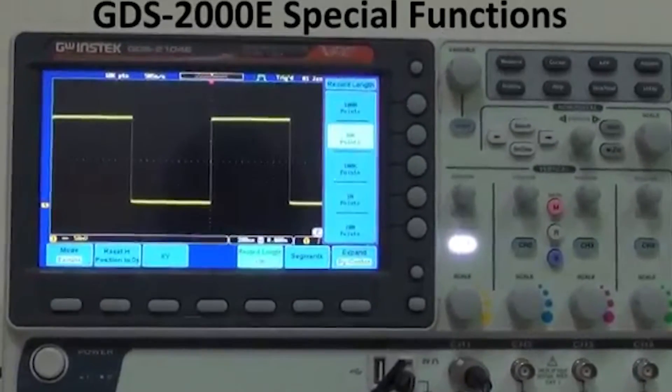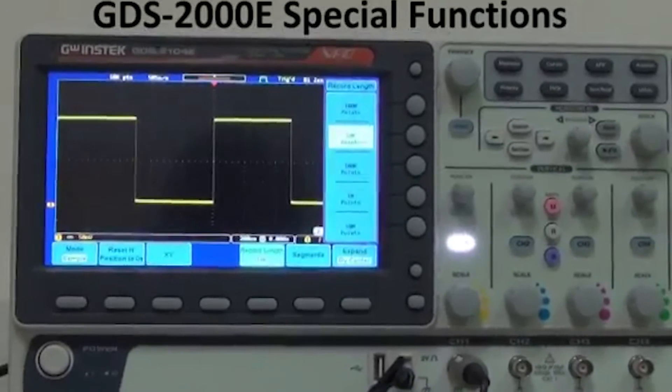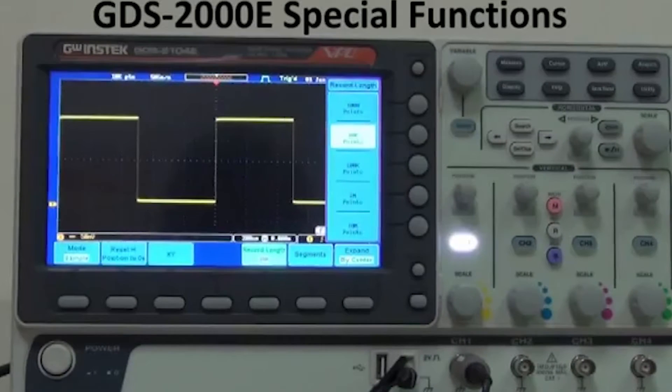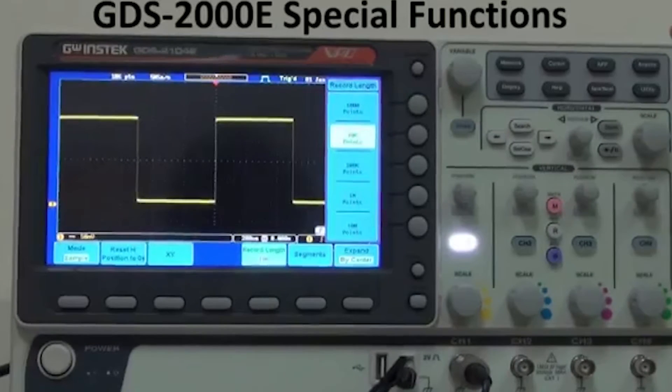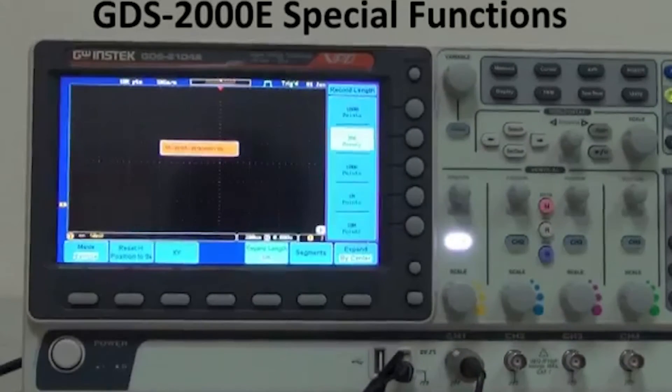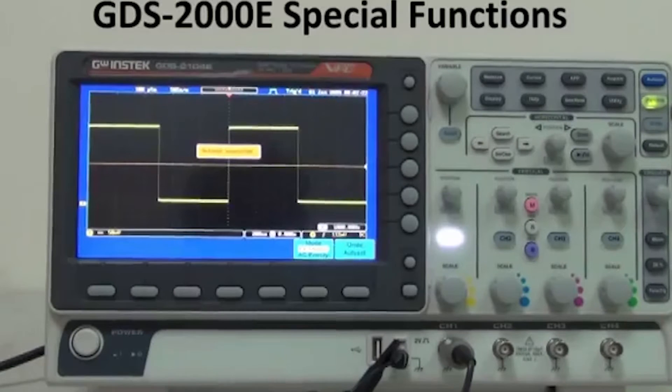Three, GDS-2000E offers FFT display, which has better resolution. The FFT display reaches 1 mega point.